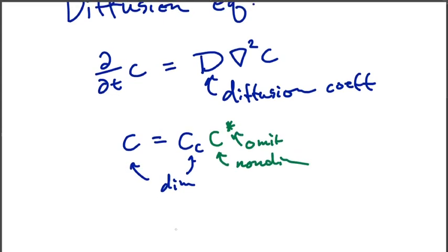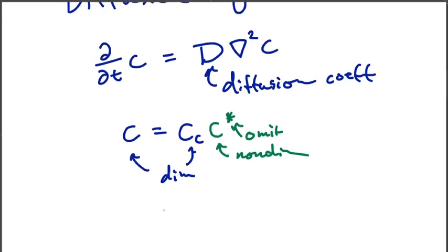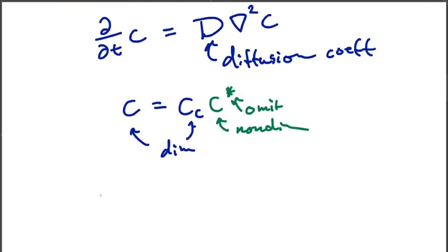So the way that we started doing this is we look at each of our terms, and we pull the dimensional bits out in front, leaving the non-dimensional bits behind. So I'm going to start with our first term. So we're going to pull out our characteristic C, and we're going to pull out our timescale tau. And these are going to come out of the partial with respect to t of our quantity C.